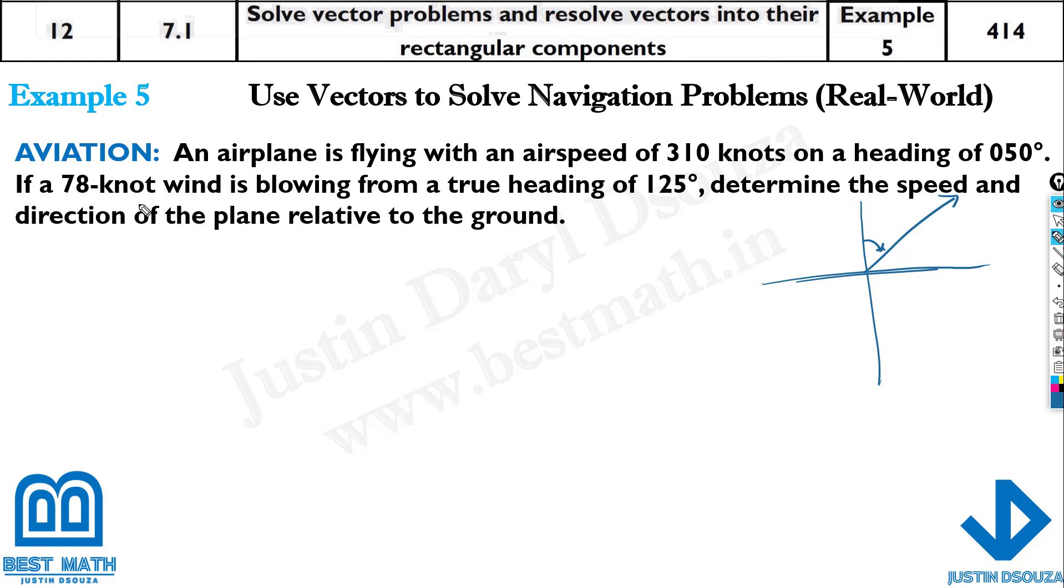If a 78-knot wind is blowing from a true heading of 125 degrees, it's going towards north over here. Imagine this is the wind. The angle is 125 degrees, more than 90. So this must be 125 degrees. This was 50 degrees, all from north. Now determine the speed and direction of the plane relative to the ground.